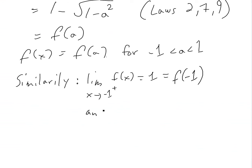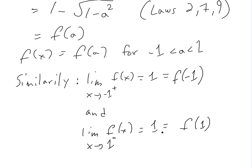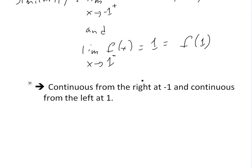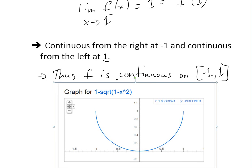Also, looking at the other endpoint, the limit as x approaches 1 from the left of f(x), doing the same limit calculation, gives us 1, which equals f(1) when we plug in 1. So the function is continuous from the right at -1 and continuous from the left at 1. It's continuous at the endpoints and in between, so it is continuous overall on the closed interval [-1, 1].